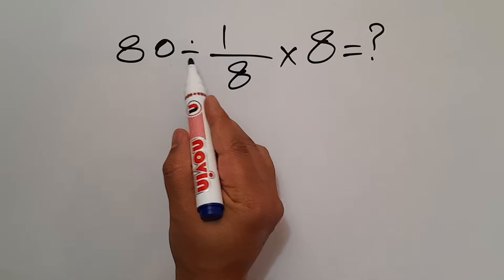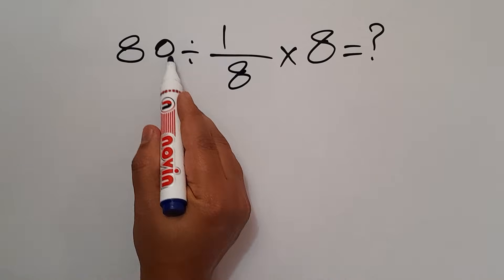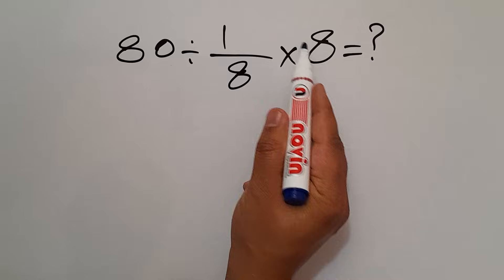As we know, multiplication and division have equal priority and we have to work from left to right. So first we do this division and then this multiplication.